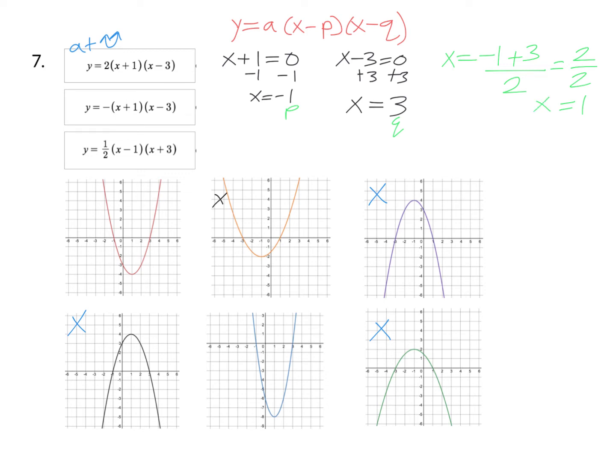So plug that number into the equation. We have y equals two times one plus one times one minus three. And you'll see that's two times two times negative two. Now just multiply those three numbers together. Two times two is four. Four times negative two is negative eight. So that means our vertex should be at one negative eight.